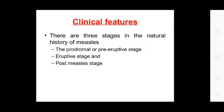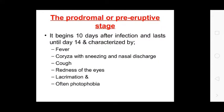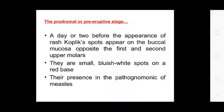Clinical features — signs and symptoms: there are three stages in the natural history of measles: the prodromal or pre-eruptive stage, the eruptive stage, and the post-measles stage. The prodromal stage begins 10 days after infection, lasts until 14 days, and is characterized by fever, coryza with sneezing and nasal discharge, coughing, redness of the eyes, lacrimation, and often photophobia. A day or two before the appearance of the rash, Koplik spots appear in the buccal mucosa opposite the first and second upper molars — small bluish-white spots on a red base, which are pathognomonic of measles.